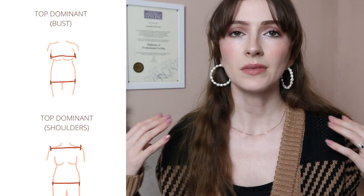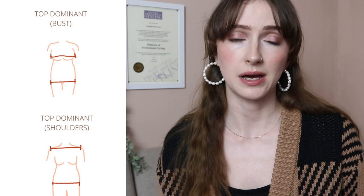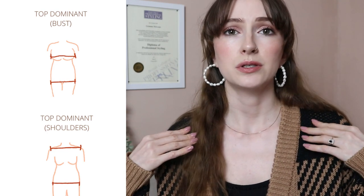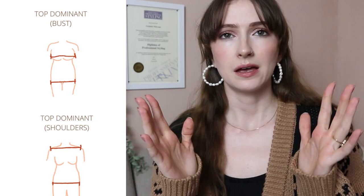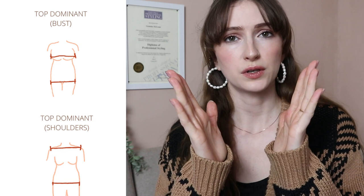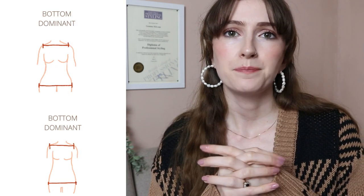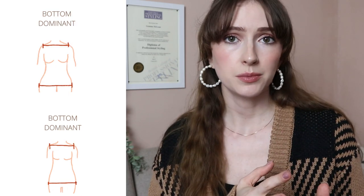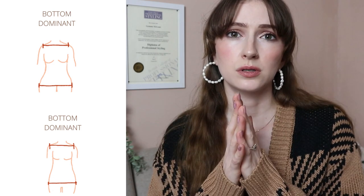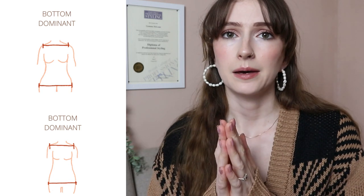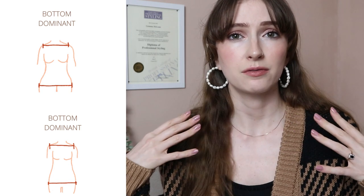I came up with five dominant types. The first is top dominant — this is when your top half is bigger or wider than your bottom half. Maybe your shoulders are wider than your hips, or your bust is wider than your hips. The next one is bottom dominant: similar to top dominant, but where you carry more width on your bum and hips, or you tend to have more narrow shoulders.